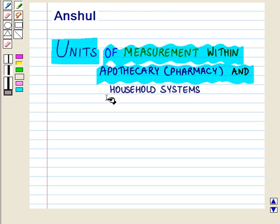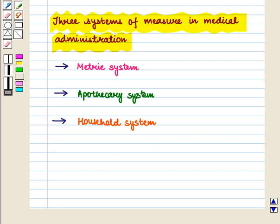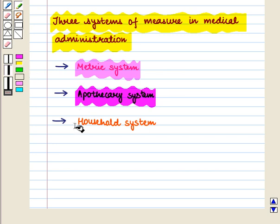There exist three systems of measure in medical administration and these are metric system, apothecary system, and household system. These systems have units of measure that are approximately related to each other but are not exactly equal.